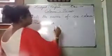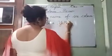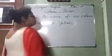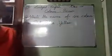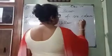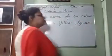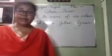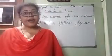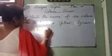Next is yellow. Y-E-L-L-O-W, yellow. Next: red, blue, yellow, green. Green. G-R-E-E-N, green. Then, you can write orange. O-R-A-N-G-E.